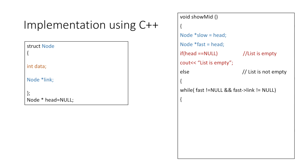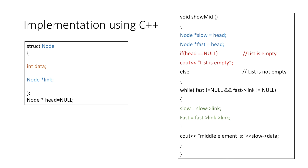If our list is not empty, we start our while loop with the condition that until fast is not equal to null or the link part of fast is not equal to null, we increment the slow pointer by one and the fast pointer at a pace of two nodes. After the loop ends, our slow pointer will be at the middle element, so we display the data part of the node our slow pointer is pointing to — that would be the middle element. I have linked the code for this program in the description. Thank you for watching.